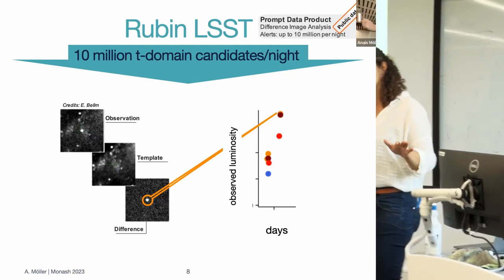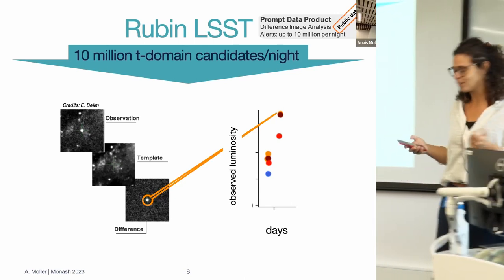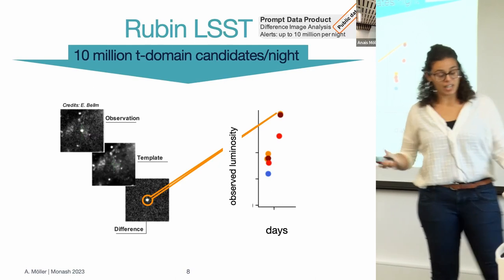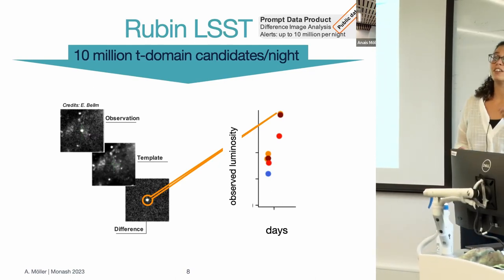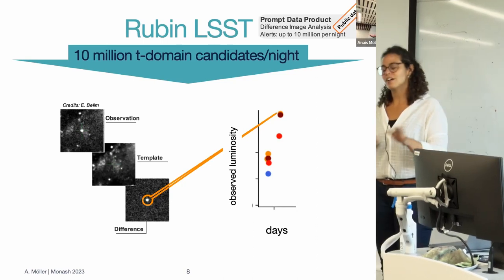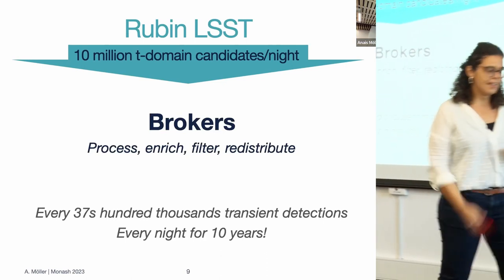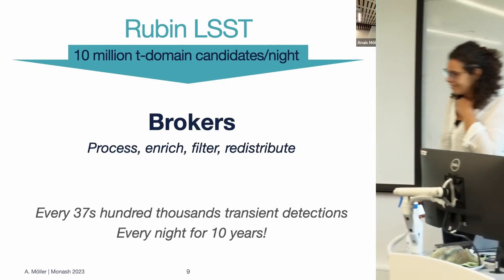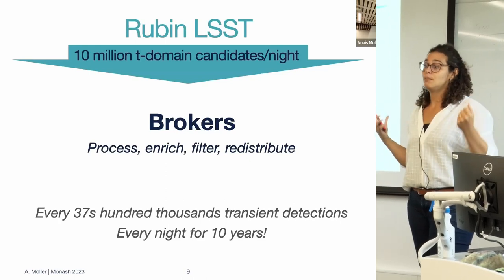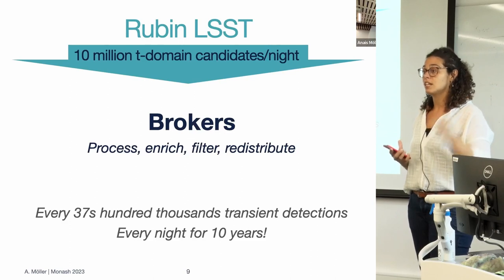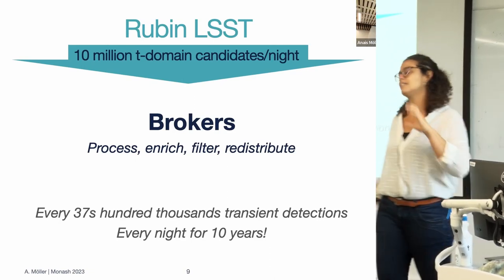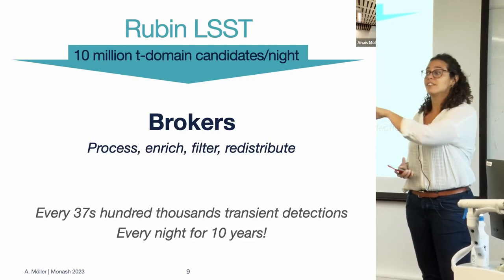Each detection will contain thumbnails of the images, the light curve plus a history up to one year for the same coordinate, plus some contextual information like whether it's near a galaxy or cross-matches with catalogs. When Rubin started to see all these data volumes they made a call for brokers — infrastructures that will receive these 10 million alerts per night in real time, every 37 seconds, and process them with information from other catalogs, machine learning classifiers, etc.